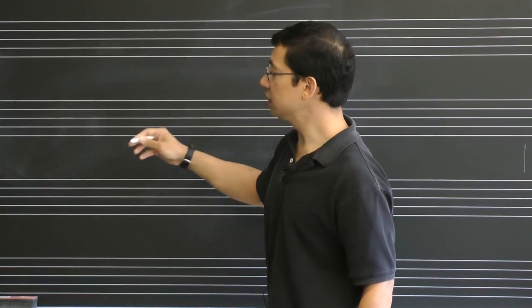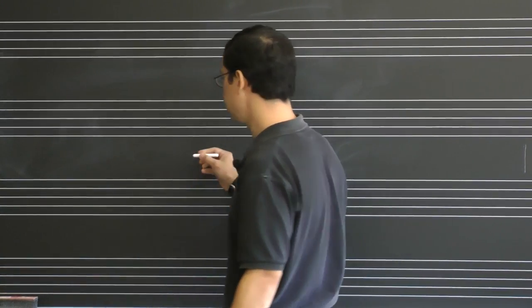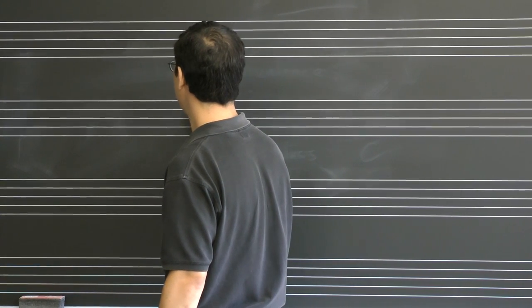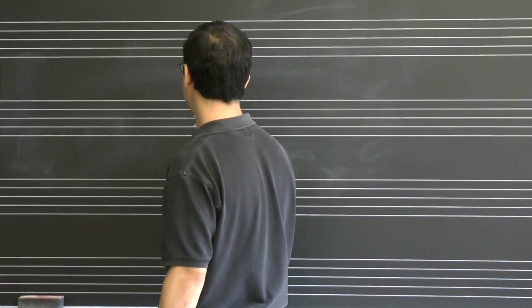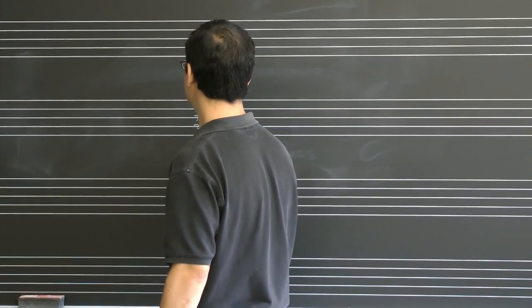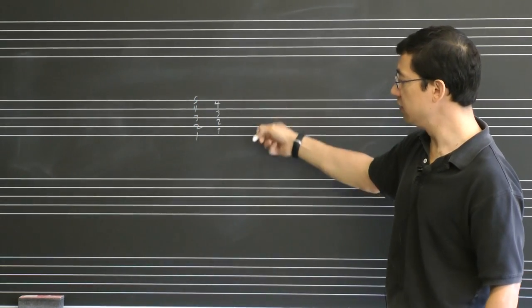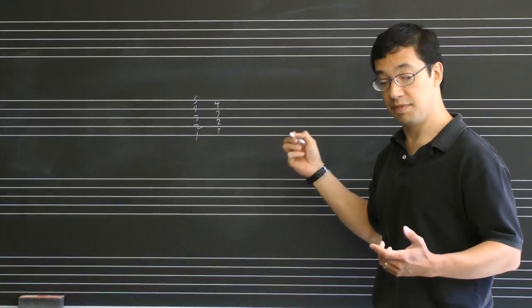We number the staff lines and spaces starting from the bottom. So first line, second, third, fourth and fifth. First space, second, third, fourth space. And we're going to write notes on this staff to designate pitches.